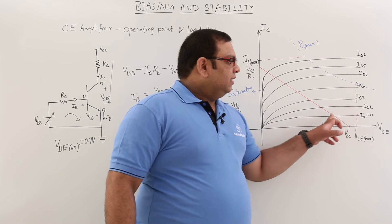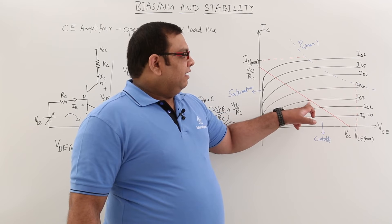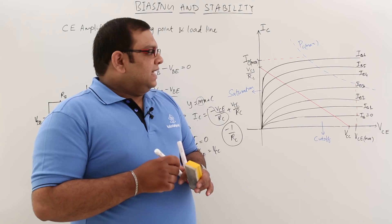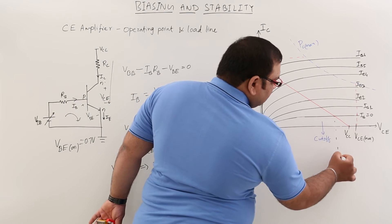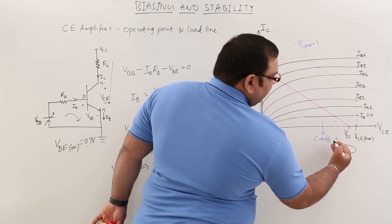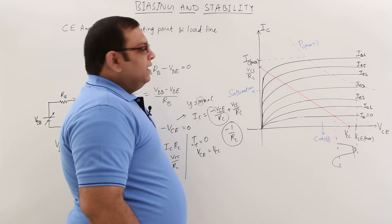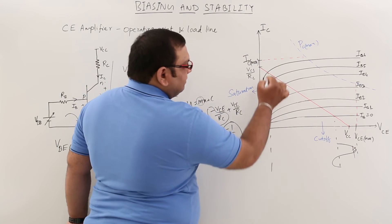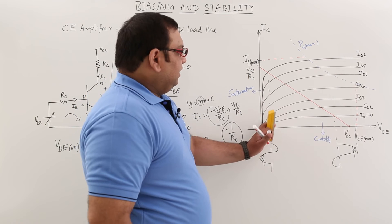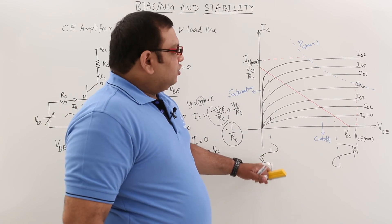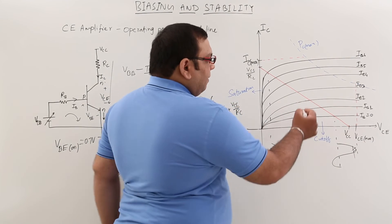The load line shows where we can operate the transistor. It intersects the output characteristics at different IB values — IB1, IB2, IB3, and so on. If we operate near IB1 (close to cutoff), the swing crosses VCE and the output is distorted. If we operate close to saturation, the negative portion is clipped. So we must carefully choose the operating point.